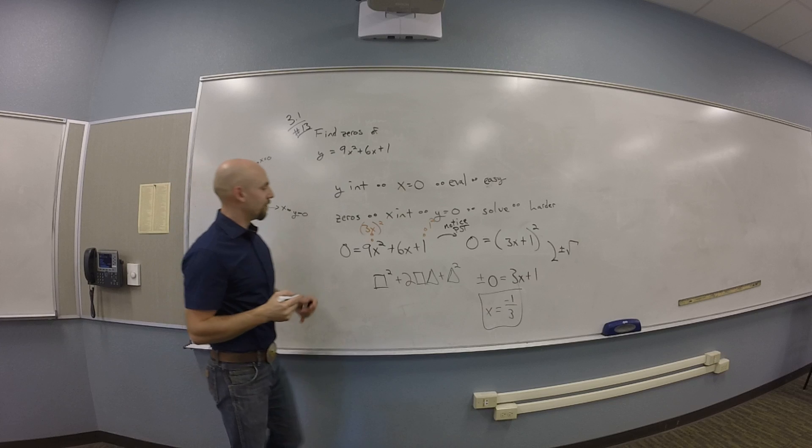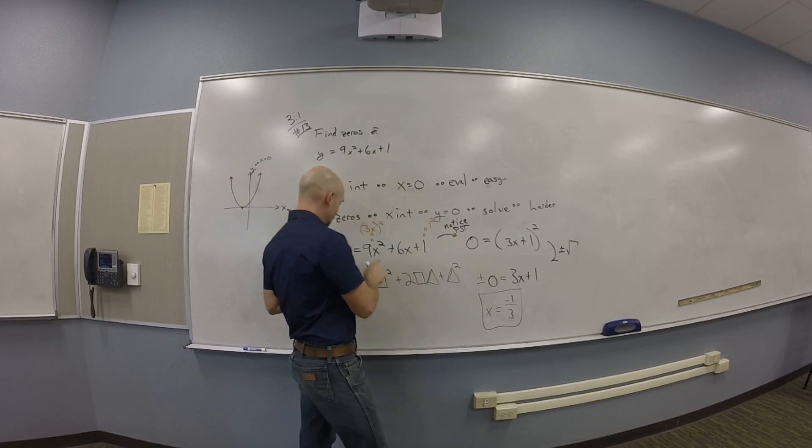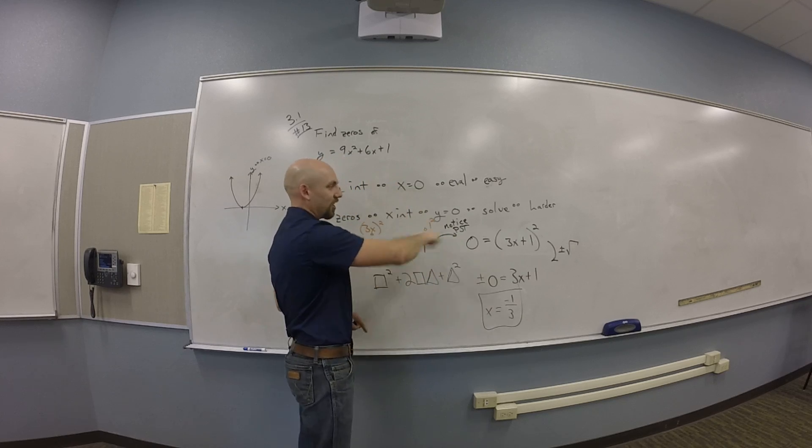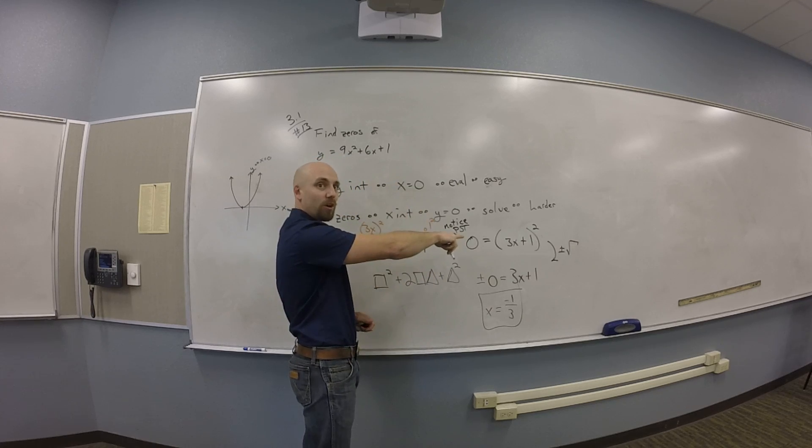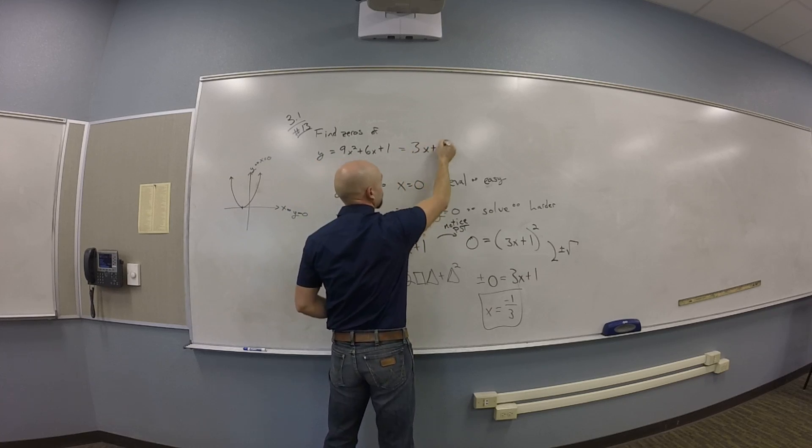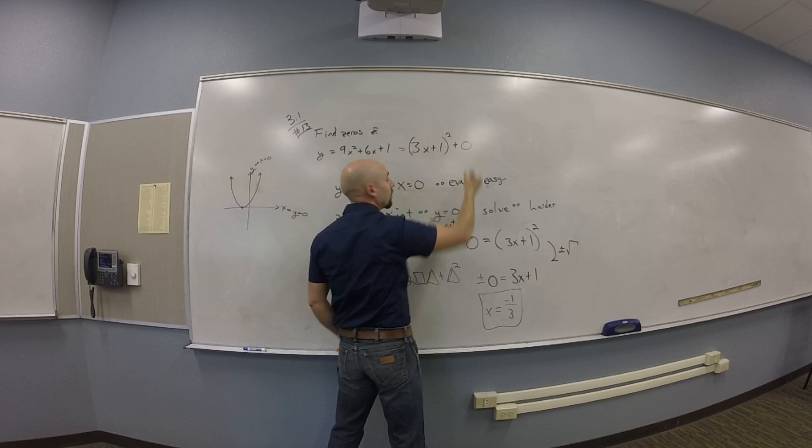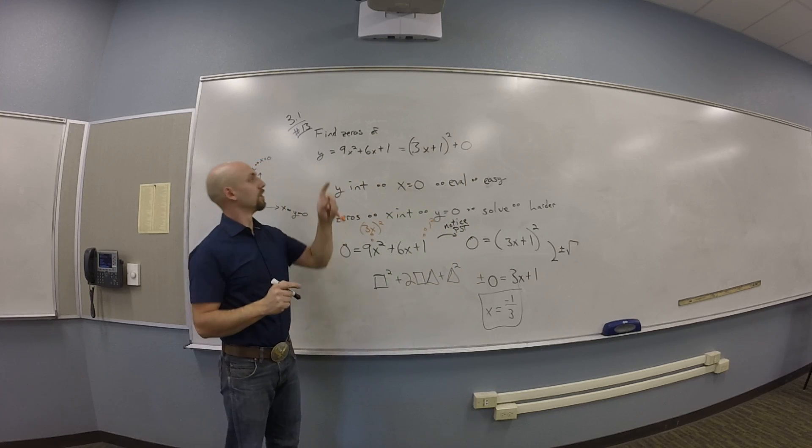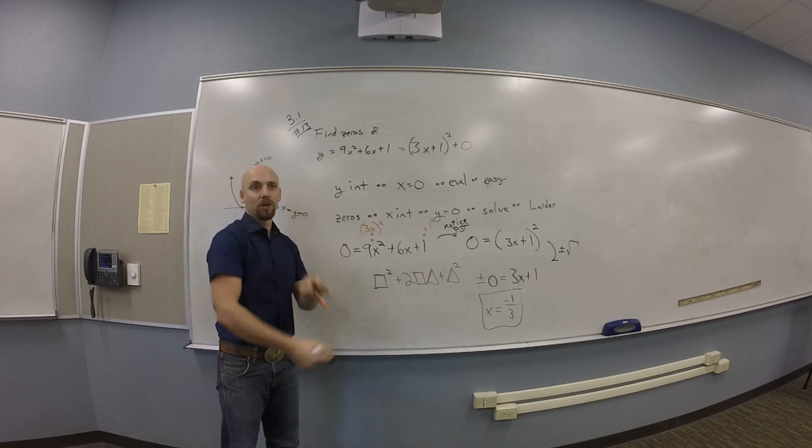I know that's the vertex because really I noticed that not only is zero equal to 3x plus 1 quantity squared, but also actually the whole function is 3x plus 1 quantity squared plus zero. So this is no vertical shift, there's a horizontal shift and some horizontal compression.